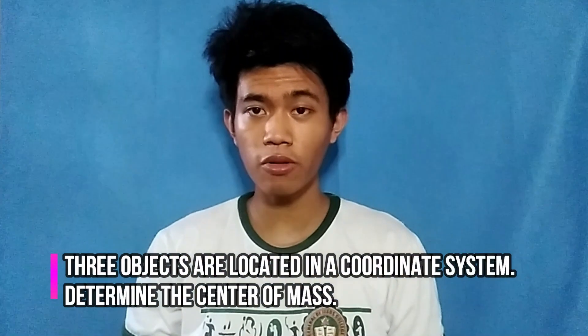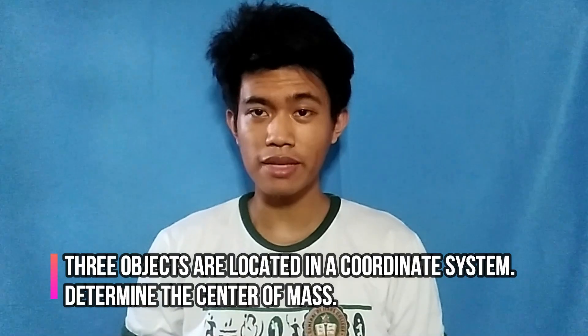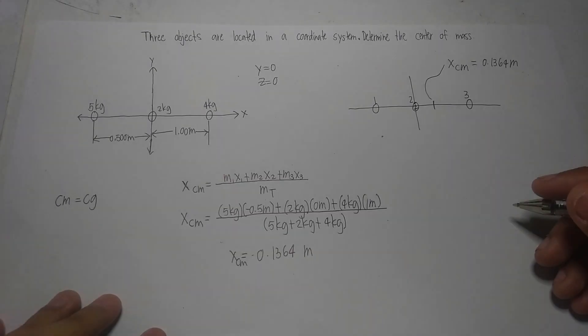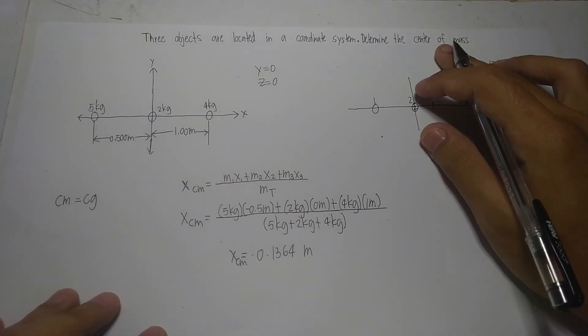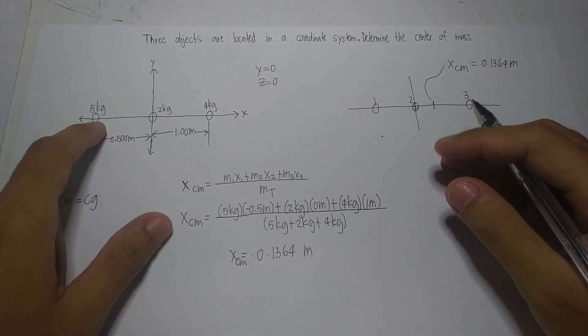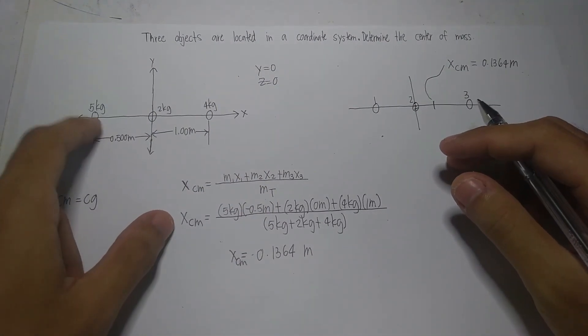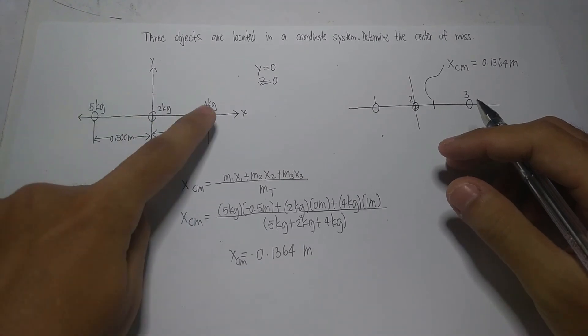So we will solve a sample problem involving that subject. The problem is three objects are located in a coordinate system. Determine the center of mass. In this particular problem, we are tasked to find the center of mass of the coordinate system. It involves three objects. We will denote it as object 1, object 2, and object 3.